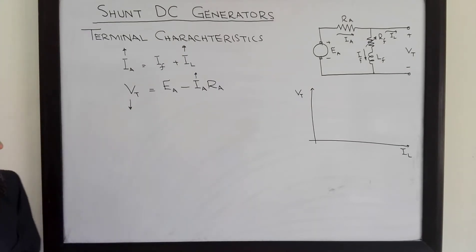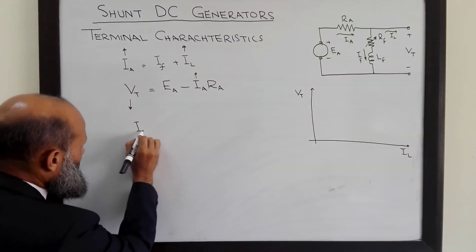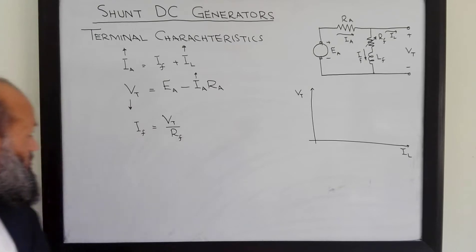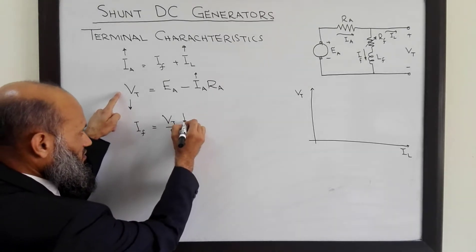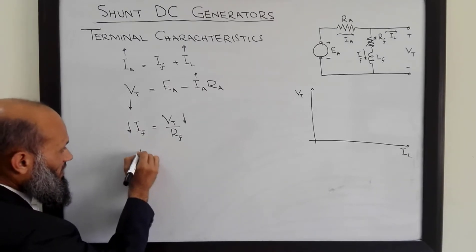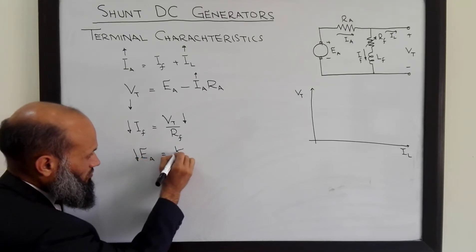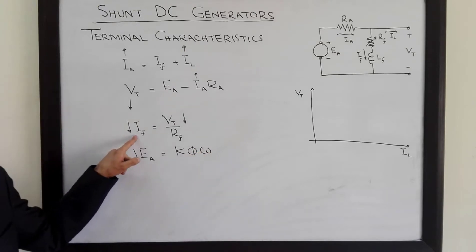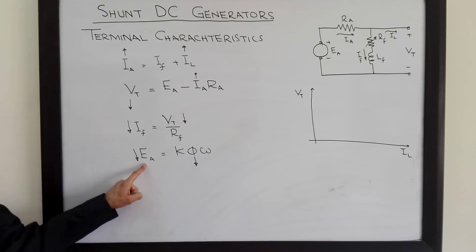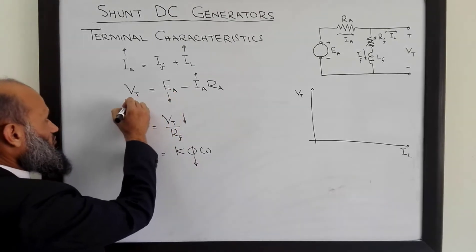This terminal voltage will decrease. And we also know that field current If is given by the terminal voltage divided by field resistance. So, as terminal voltage decreases, If will also decrease. And due to the decrease in If, Ea will decrease, because Ea is equal to k·phi·omega. Due to decrease in If, flux will decrease, and due to that, Ea will decrease. Decrease in Ea will result in further decrease in the terminal voltage.